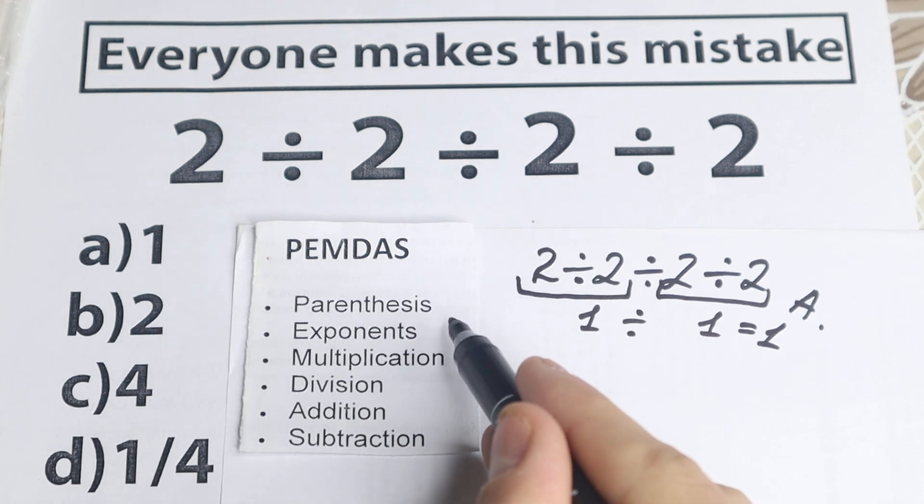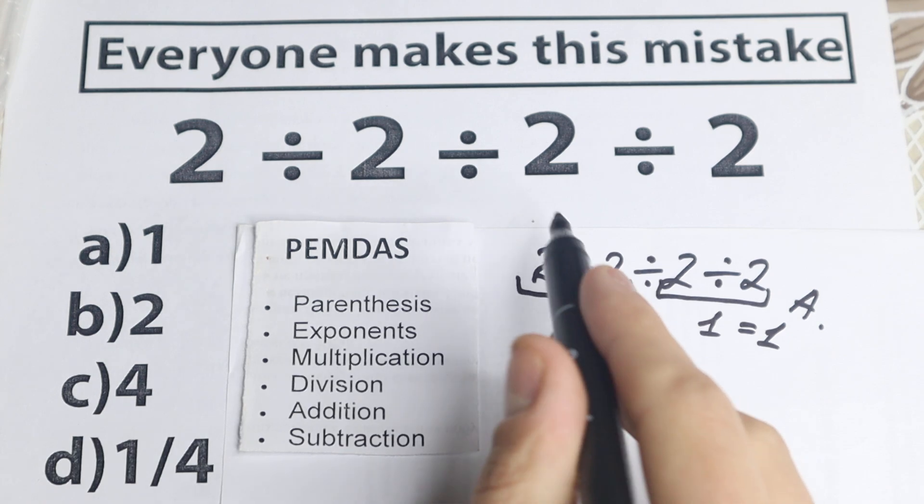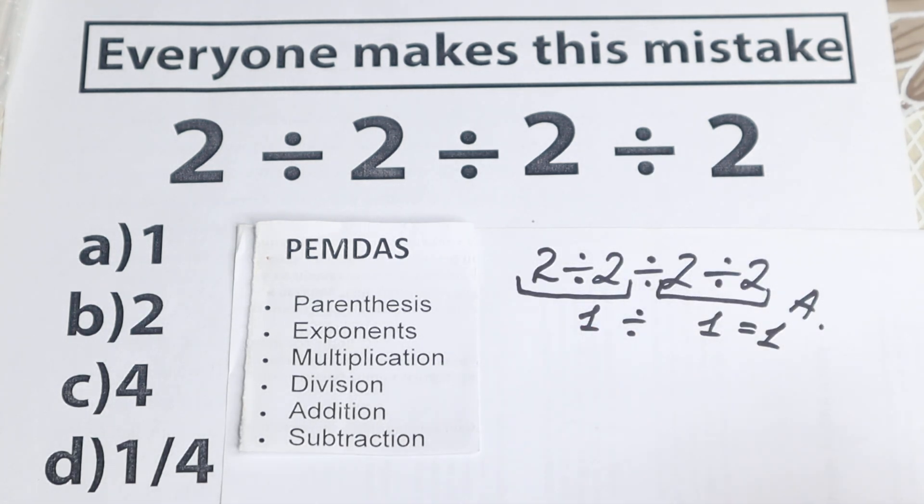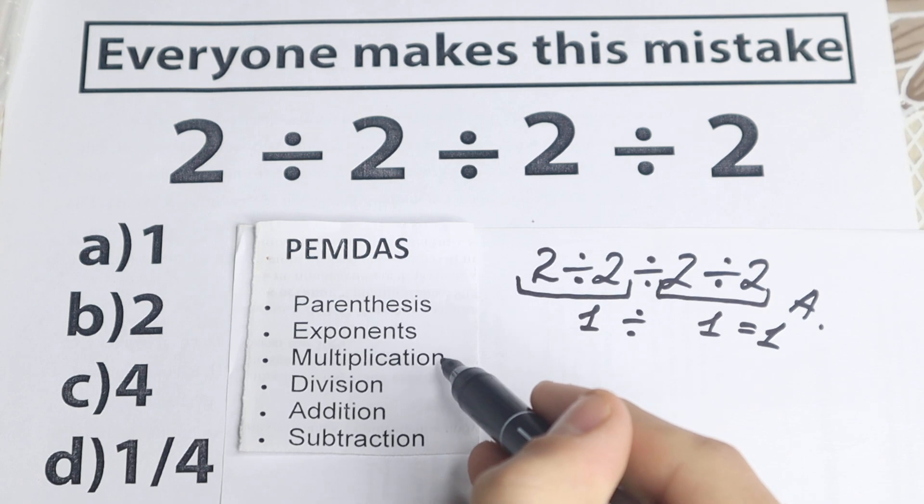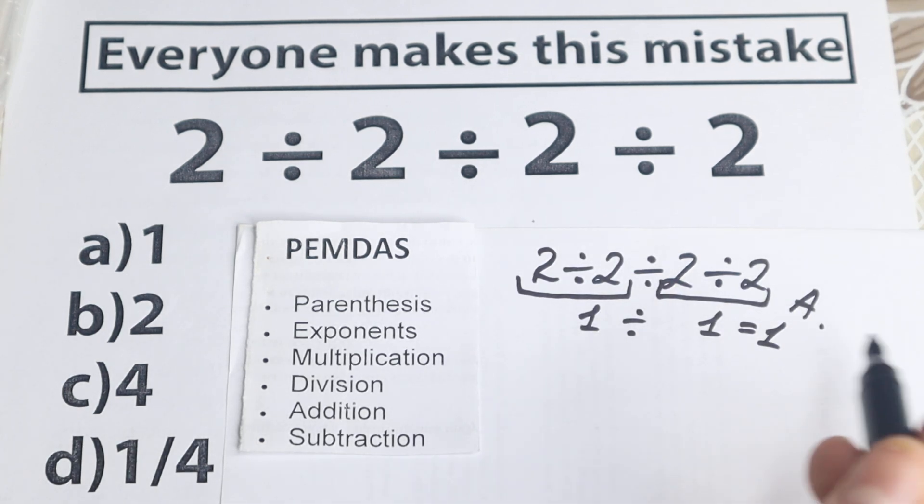So first step in our PEMDAS order is parentheses, are there any parentheses? No, I don't see any of those. Exponents? I don't see any exponents, no squares, no cubes, no parentheses, this is really great. The third step, multiplication and division, we don't have multiplication, we will have only division, so this is really great.